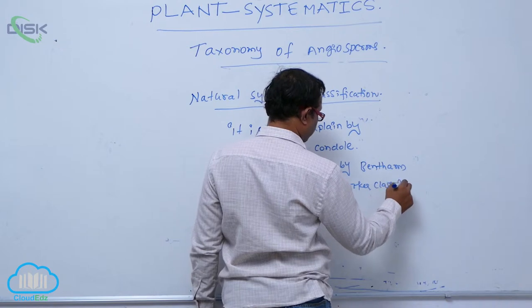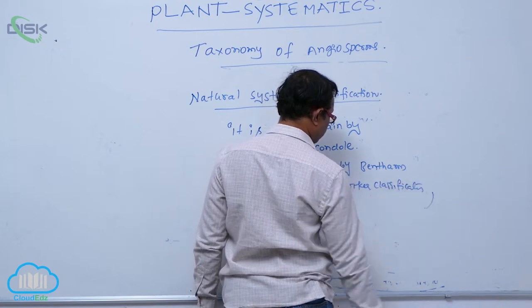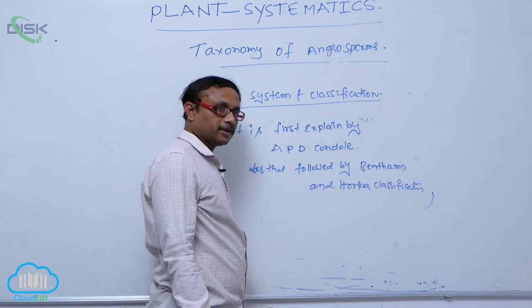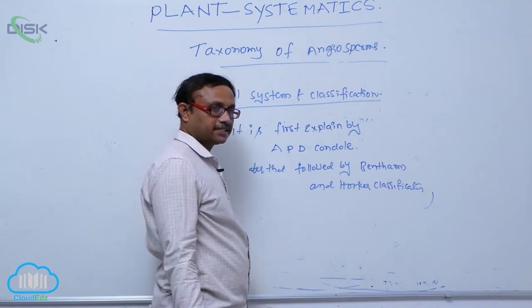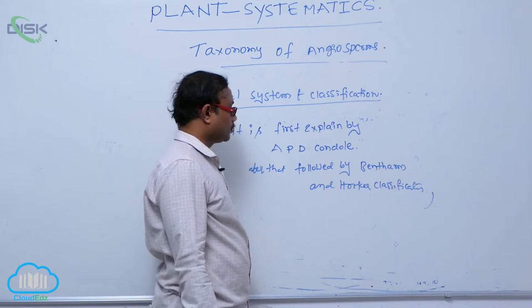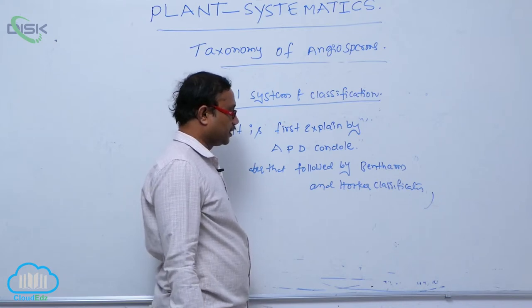Bentham and Hooker classification is the natural system of classification. It is accepted by all the biologists in all commonwealth countries. This classification is agreed upon, so it is running.